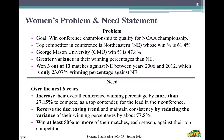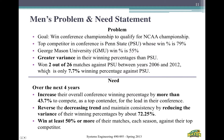Our problem and need statement: for the women's program, they were only winning 3 out of 13 matches against Northeastern between 2006 and 2012 — a 23.07% win percentage. Their need is to increase that win percentage. For the men's, they won only 2 out of 26 matches against Penn State between 2006 and 2012, a 7% win rate, so they need to increase their chance of winning against Penn State.